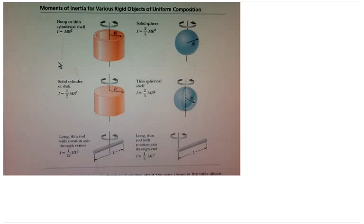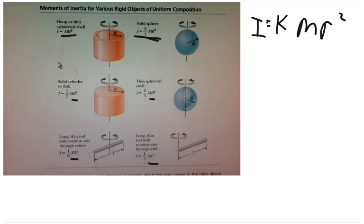The chart gives the moment of inertia equation for each object. In every equation, MR² is the same because all masses are 5.39 kg and all radii are 0.252 m. I'll define I = K·MR², where K is the coefficient. For the hoop K = 1, for the solid sphere K = 2/5, for the solid cylinder K = 1/2, and for the thin spherical shell K = 2/3. Using K will make the equations easier to follow.